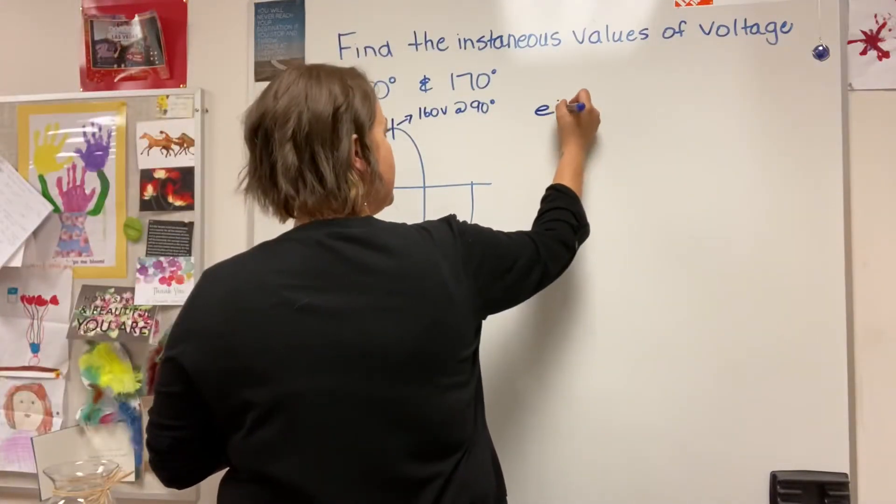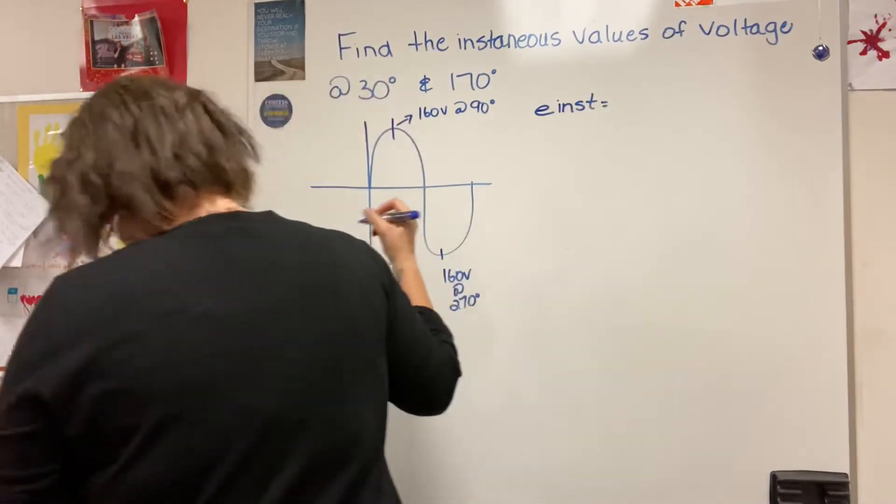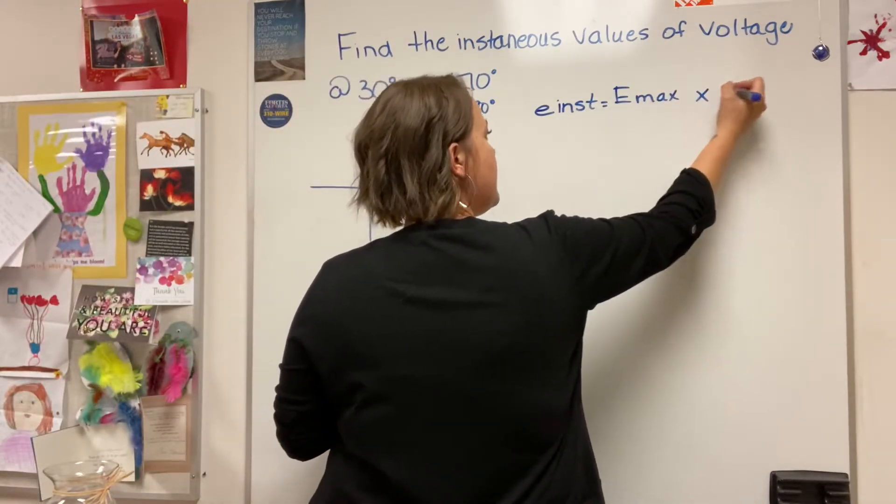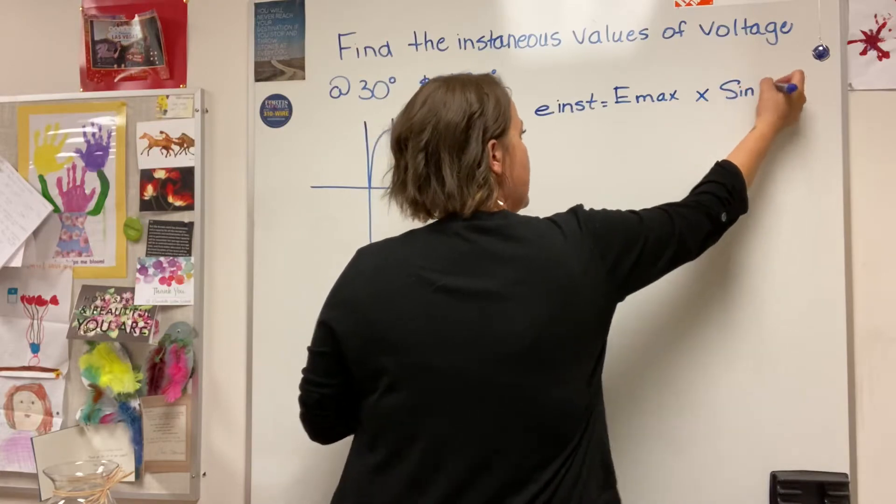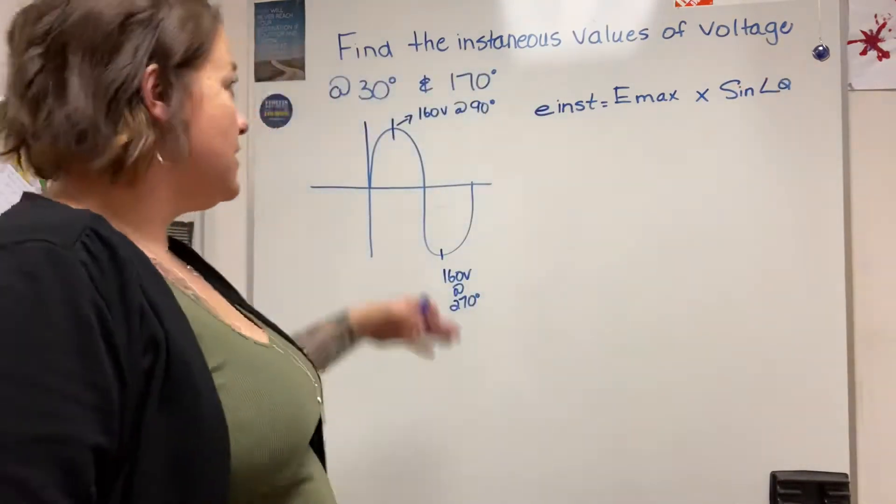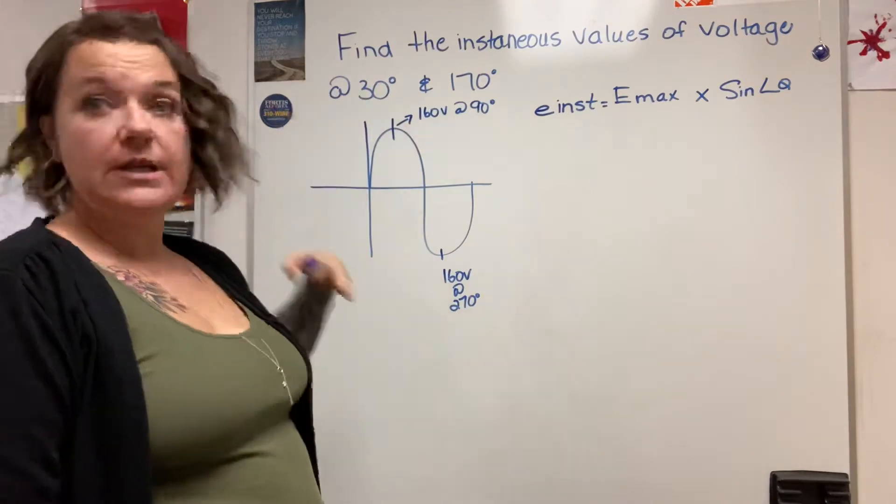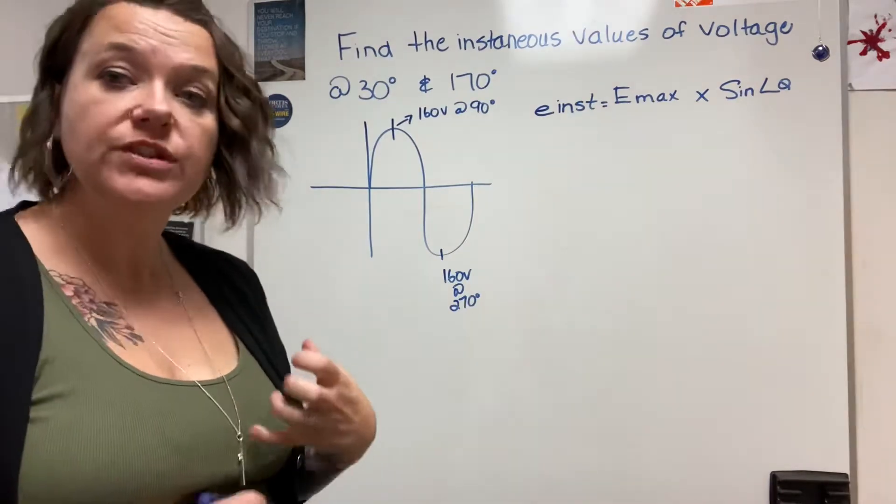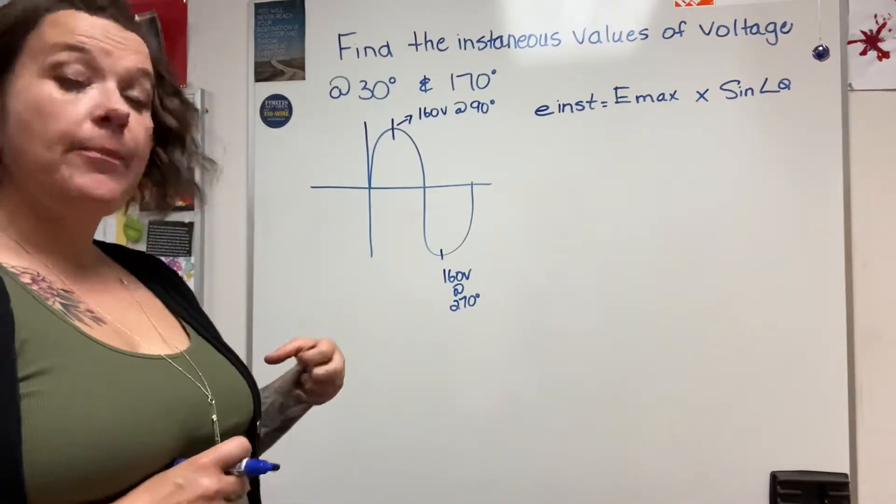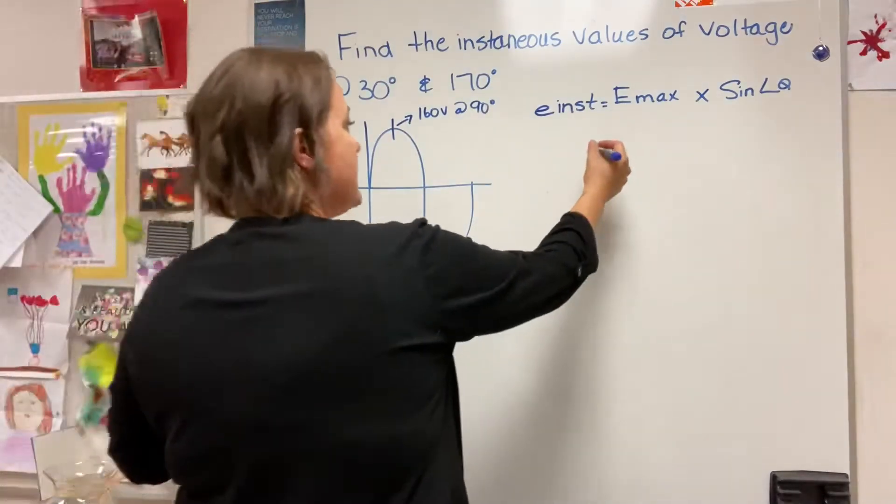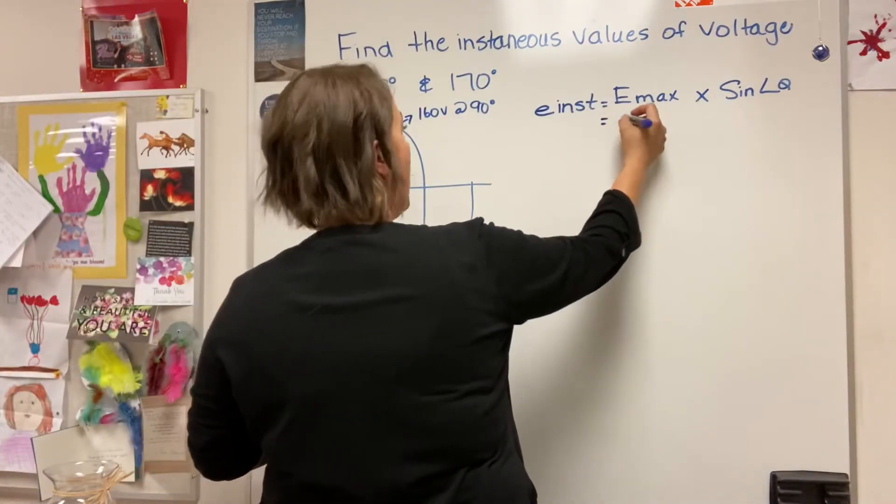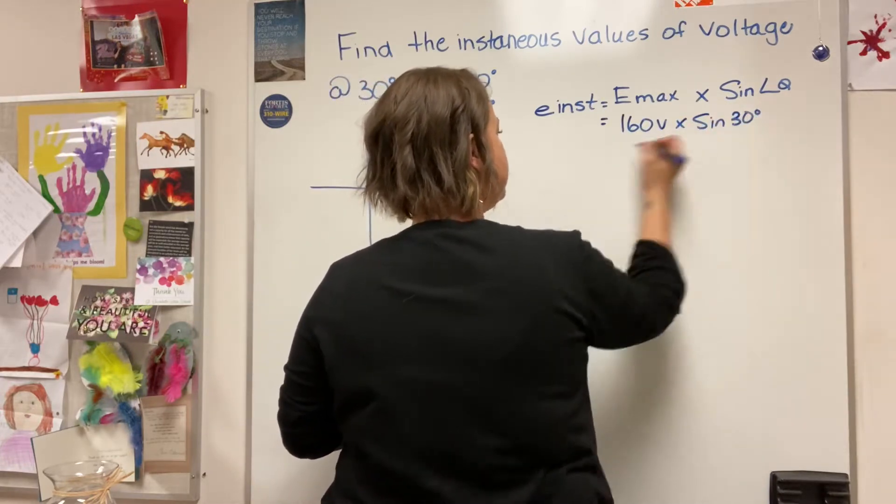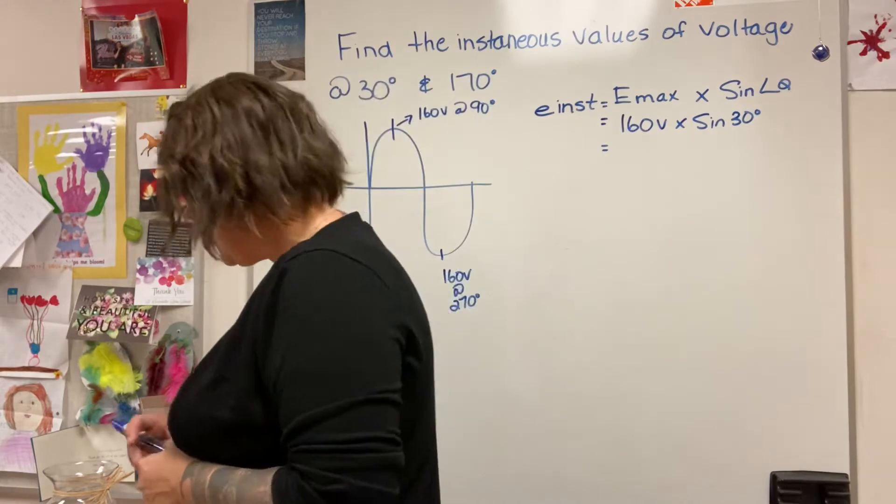e instantaneous equals e max times the sine of the angle theta, or in our situation here, the sine of 30 degrees or the sine of 170 degrees. Using this formula we will find how much voltage is being generated at that particular time in our cycle. Our e maximum is 160 volts times the sine of 30 degrees. That works out to be 80 volts.